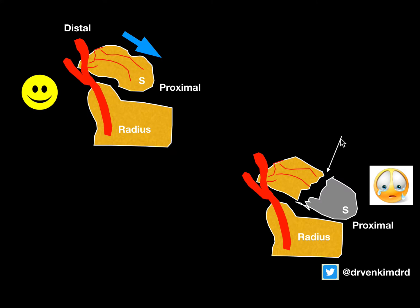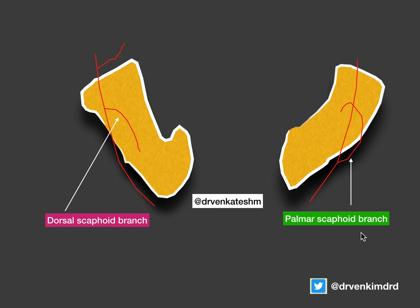Let us see what is the blood supply of the scaphoid, which is peculiar and always needs to be remembered. This is the proximal pole, this is the distal pole of the scaphoid, and this is the waist of the scaphoid. The blood supply to this entire scaphoid always arises distally — branches arise distally and go to the proximal aspect through the waist of the scaphoid. Once there is a fracture here, the blood supply to the proximal pole is cut off completely, leading to a high risk for avascular necrosis if not operated immediately.